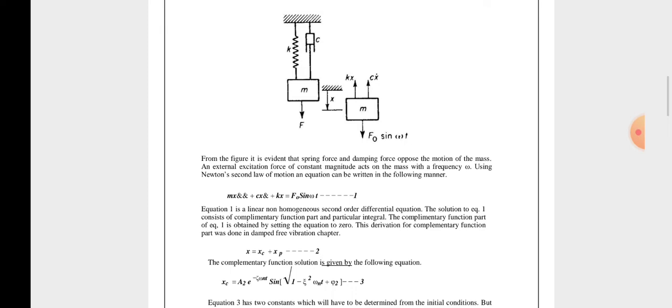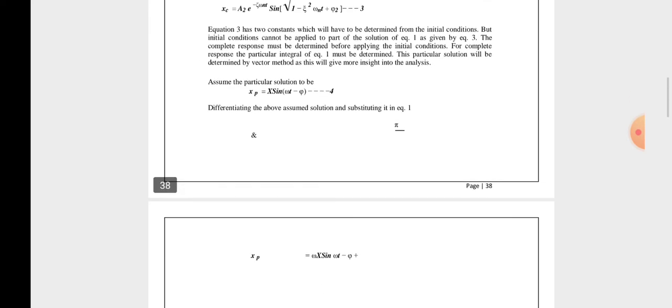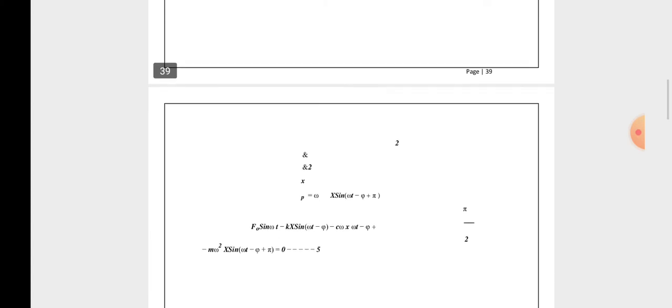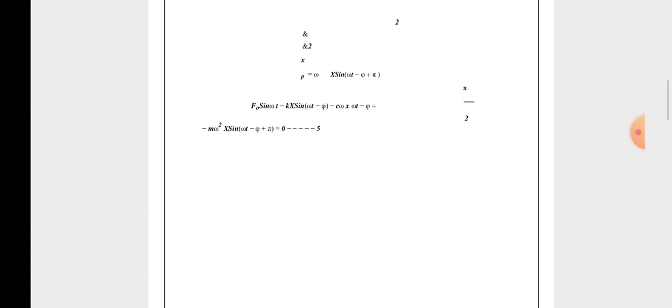The complementary function xc equals A2·e^(−ζωn·t)·sin(√(1−ζ²)·ωn·t + ψ2), which is equation number 3. The two constants can be determined by initial conditions. Using the vector method, the particular integral is xp equals X·sin(ωt − φ), and finally x equals F0·sin(ωt − φ).